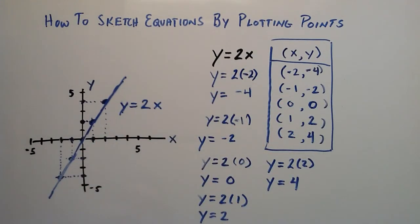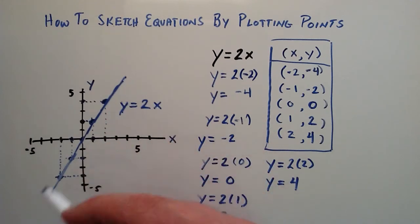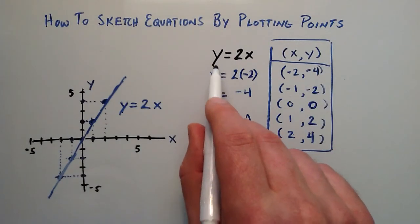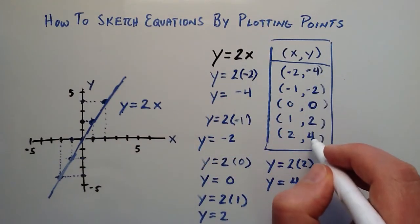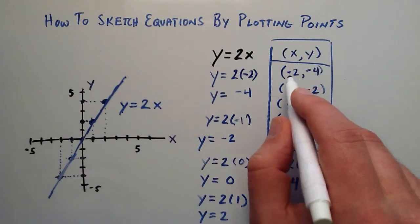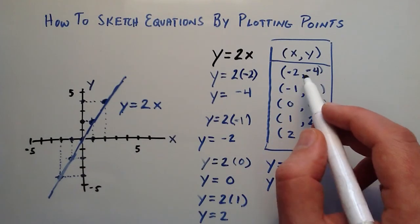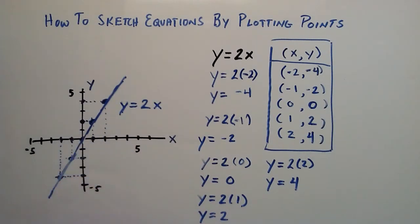That was an introduction on how to sketch equations by plotting points in the x-y coordinate system. This line is y equals 2x, found by choosing x components and using them with the equation to find corresponding y components. Once we have the x and y components, we put them into ordered pairs, which are points we can plot on the x-y coordinate system. Once all points are plotted, we connect the dots and we have our sketch.